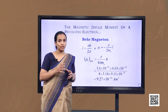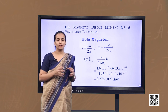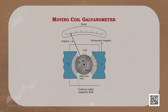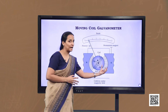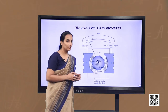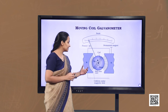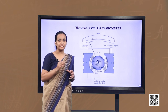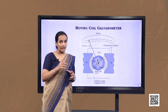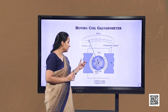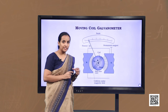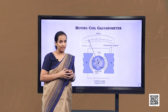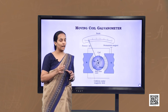Now let us understand the working of the moving coil galvanometer. It consists of a coil of many turns, free to rotate about a fixed axis in a uniform radial magnetic field. A soft iron core serves a dual role: it provides a radial magnetic field to the coil and increases the strength of the magnetic field. When current flows through the coil placed in this magnetic field, it experiences a torque.